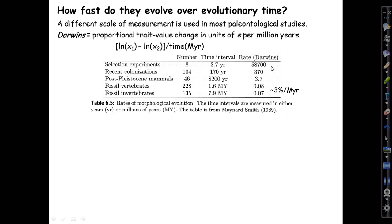The rates of change in darwins vary by orders of magnitude depending on the time scale. The author of this table looked at eight selection experiments, similar to the natural observations that Hendry and Kinnison summarized, but short-term experimental evolution studies. The average time interval was a little less than four years, and the rate in darwins was in the tens of thousands.